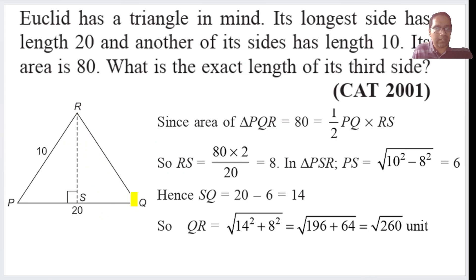So RQ squared is equal to 14 squared plus this 8 squared, which is under root. What is QR? QR is the square root of 14 squared plus 8 squared, 196 plus 64, which is the square root of 260 units.